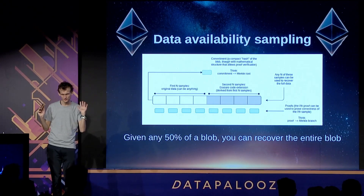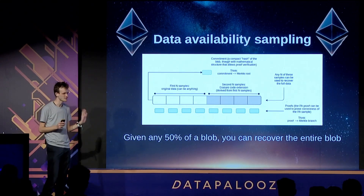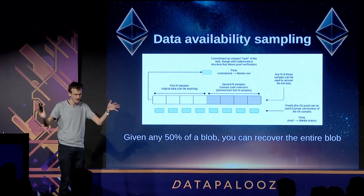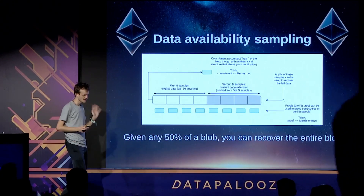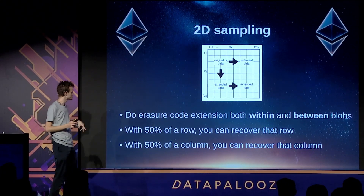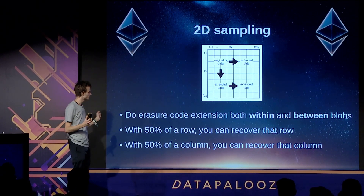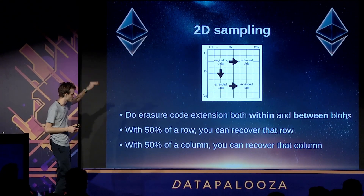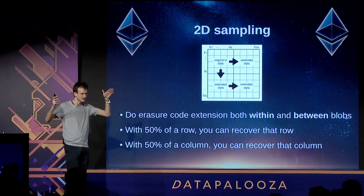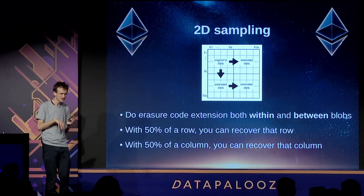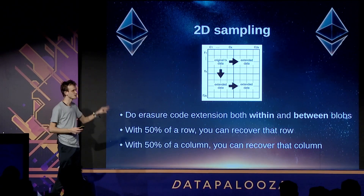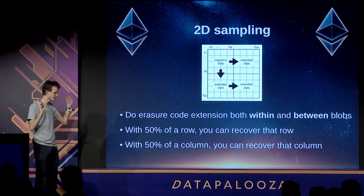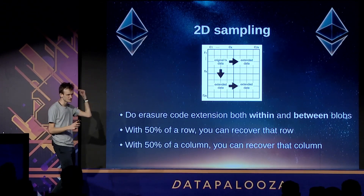We've taken the problem of verifying the entire blob is there, turned it into checking that at least 50% of a thing is there, and solved that by doing random sample checks. That's 1D sampling. 2D sampling is an extension where you don't just extend within each blob, but use the same erasure code extension algorithm to extend between blobs as well. Even with a thousand blobs of data, with only about 70 queries you can verify the availability of an entire grid that potentially has a million pieces. With 50% of a row you can recover the entire row, and with 50% of a column you can recover the entire column.